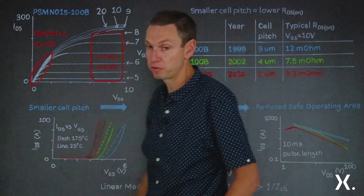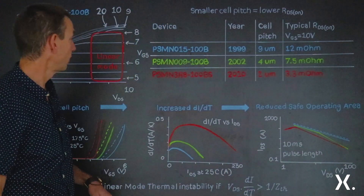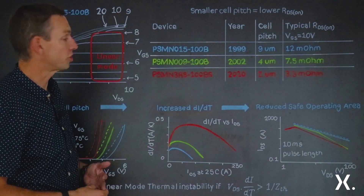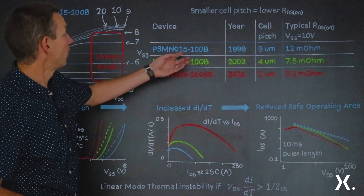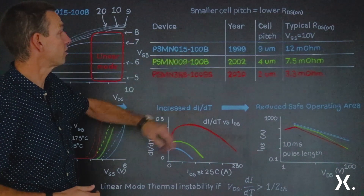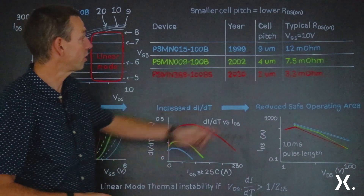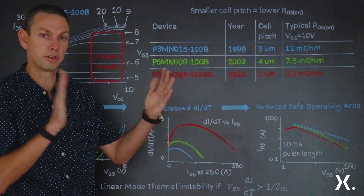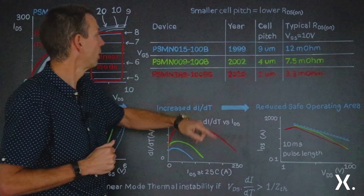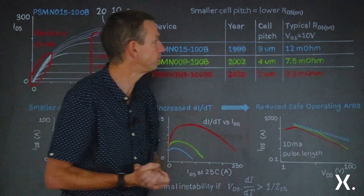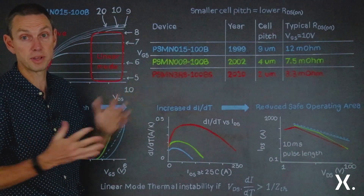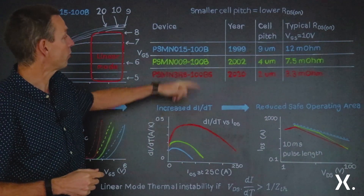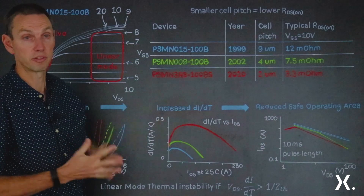Before we move on, we're going to talk about three MOSFETs in particular to illustrate stability in linear mode. On a table here we've got three MOSFETs from different generations. The PSMN015-100B was released in 1999 — a very early generation of trench MOSFETs. It had a 9 micron cell pitch (the distance in the silicon between the different trenches) and a typical resistance of 12 milliohms. Basically this MOSFET is the biggest piece of silicon that could fit in a D2 pack package.